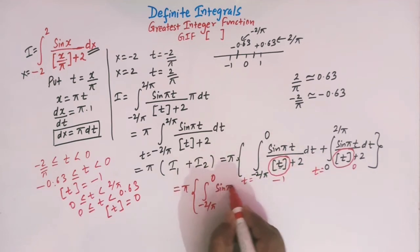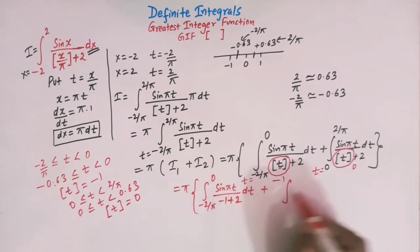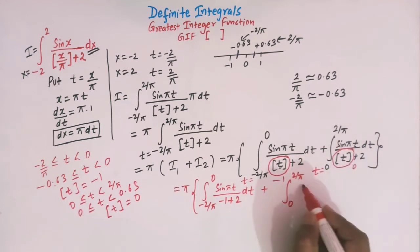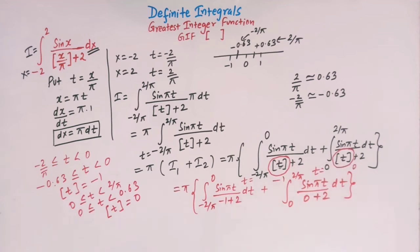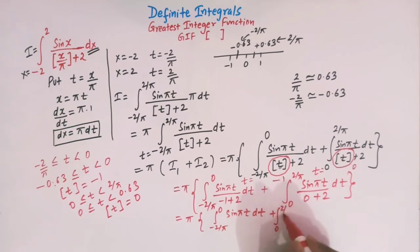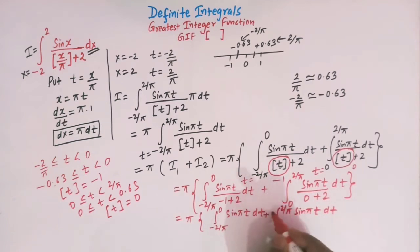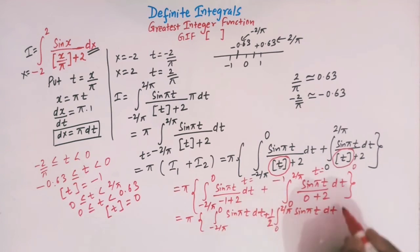So ⌊t⌋ takes the value minus 1 for I1 and 0 for I2. We can write pi times the integral from minus 2/π to 0 of sin(πt) over (minus 1 plus 2) dt, plus the integral from 0 to 2/π of sin(πt) over (0 plus 2) dt. Simplifying: minus 1 plus 2 is 1, and 0 plus 2 is 2, so we can take 1/2 outside the second integral.